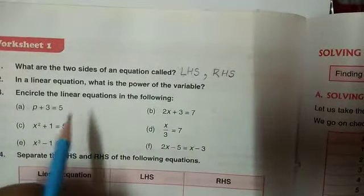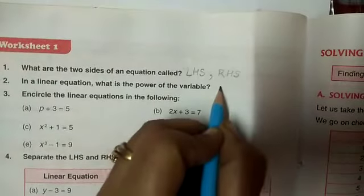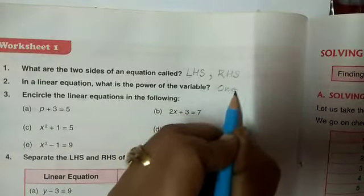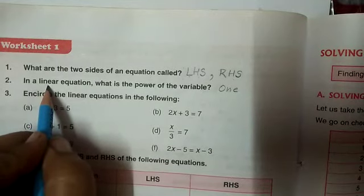In a linear equation, what is the power of the variable? Always, always 1. Linear means equation whose power of the variable is 1.